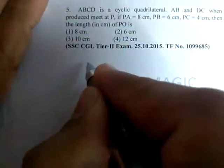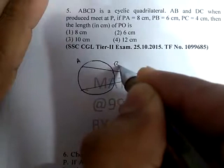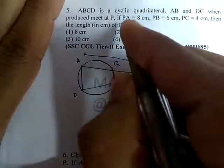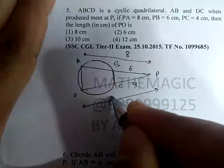ABCD is a cyclic quadrilateral. AB and DC when produced meet at P. PA is equal to 8 cm, PB is equal to 6, PC is equal to 4. Then the length of PD is x — okay, length of PD is basically to be found.